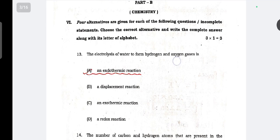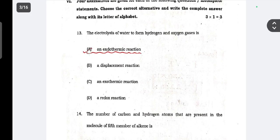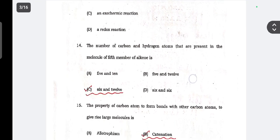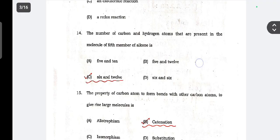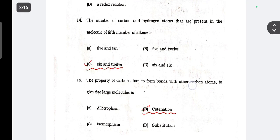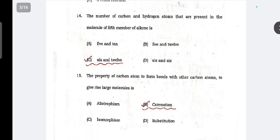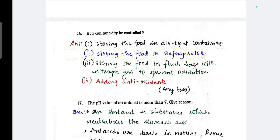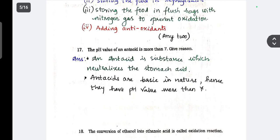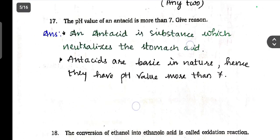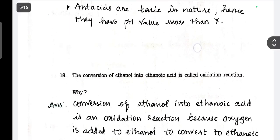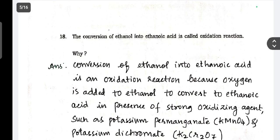Three multiple choice questions. The electrolysis of water to form hydrogen and oxygen gases is an endothermic reaction. The number of carbon and hydrogen atoms that are present in the molecule of 5th member of alkane is 6 and 12. Fifth member of alkenes is 6 and 12. The property of carbon atom to form a bond with other carbon atoms to give large molecules is called catenation. Next, one more question. How can rancidity be controlled? You need to write two points. The pH value of antacid is more than 7, give reason. The conversion of ethanol into ethanoic acid is called oxidation reaction, why?